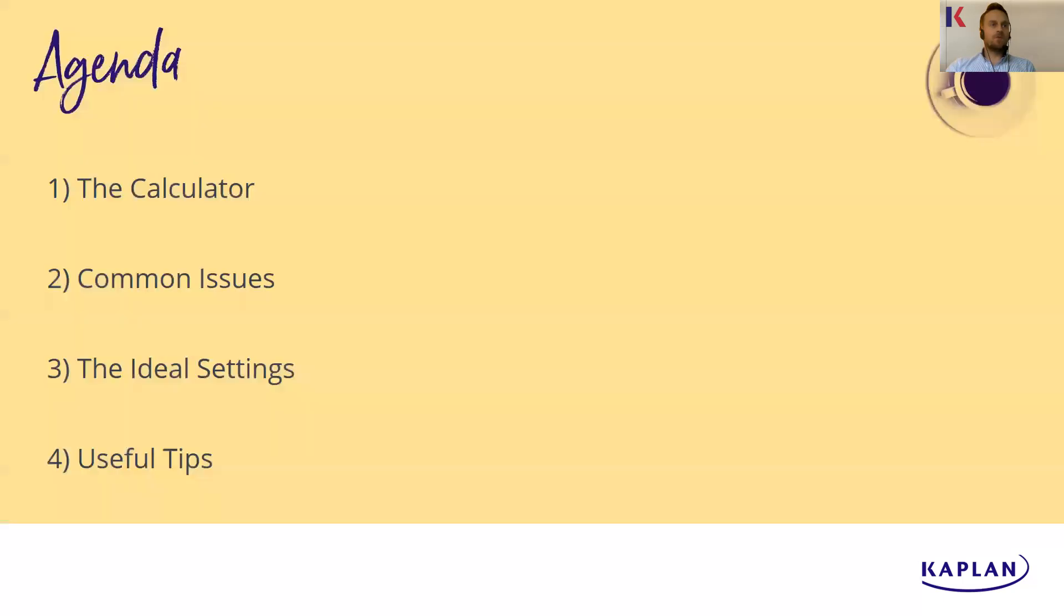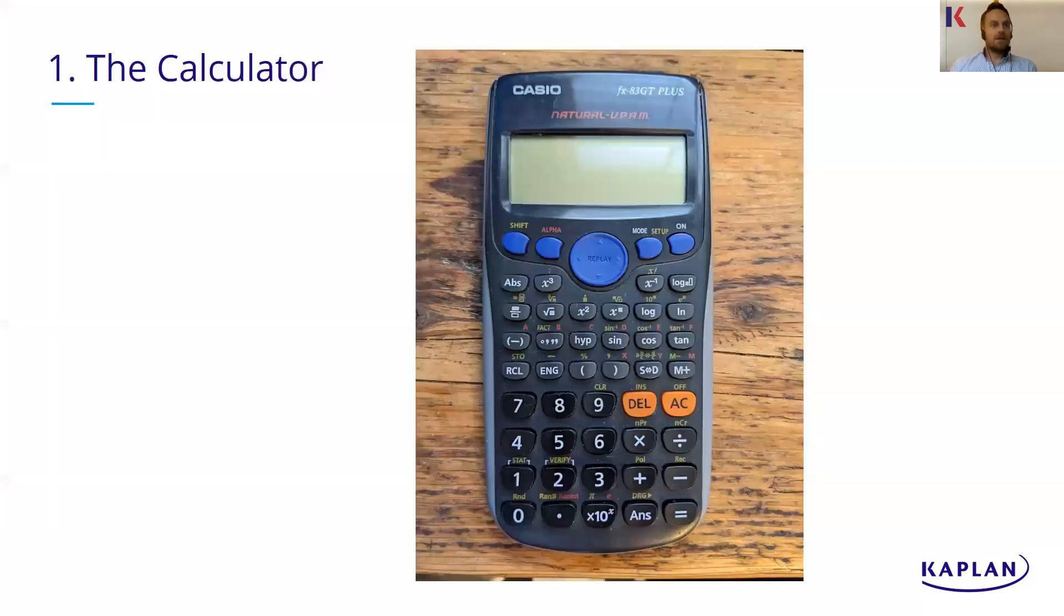So first of all I just want to run through which calculator I'm showing you, then some common issues, the ideal settings and then as I said some useful tips at the end. So I'm going to be basing this video on my trusty Casio calculator and hopefully yours is similar or has a similar layout. A lot of other brands are still laid out in the same way, a lot of scientific calculators are very similar.